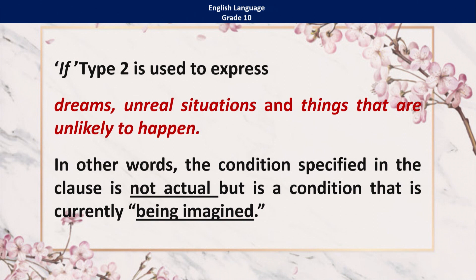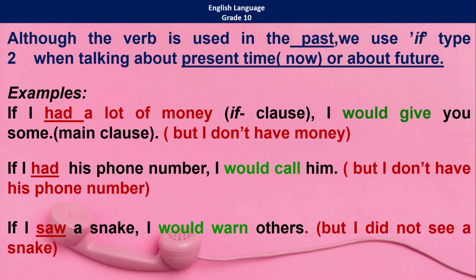Now let us see when we are using conditional type 2. We use this to express dreams, unreal situations, and things that are unlikely to happen. These things would not happen. In other words, the condition specified in the clause is not actual — it is not real, but it is a condition that is currently being imagined. That is why we said it's a dream — you dream about an unreal situation. Although we talk about the verb in the past tense, this is relevant to the present time or even the future as well.